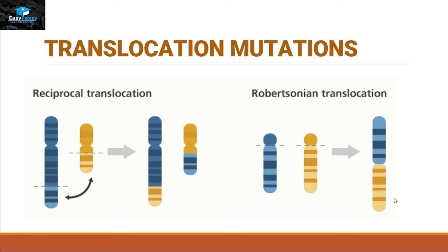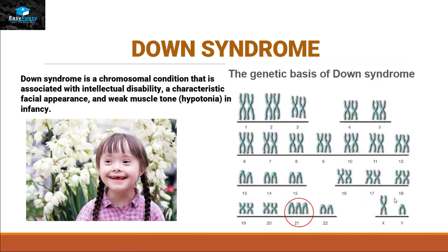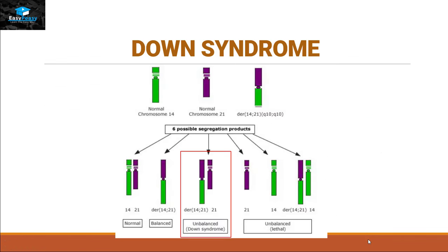A real-life example of translocation mutation is Down syndrome — a chromosomal condition associated with intellectual disability, a characteristic facial appearance, and weak muscle tone in infancy. On the genetic basis, there is an abnormality on chromosome number 21. The green portion is the normal chromosome 14 and the purple portion is the normal chromosome 21. By this translocation mutation, we have six possible segregation products: the first is normal, the second has balanced translocation, the third has unbalanced translocation in which chromosome 21 is facing duplication and chromosome 14 is facing deletion.